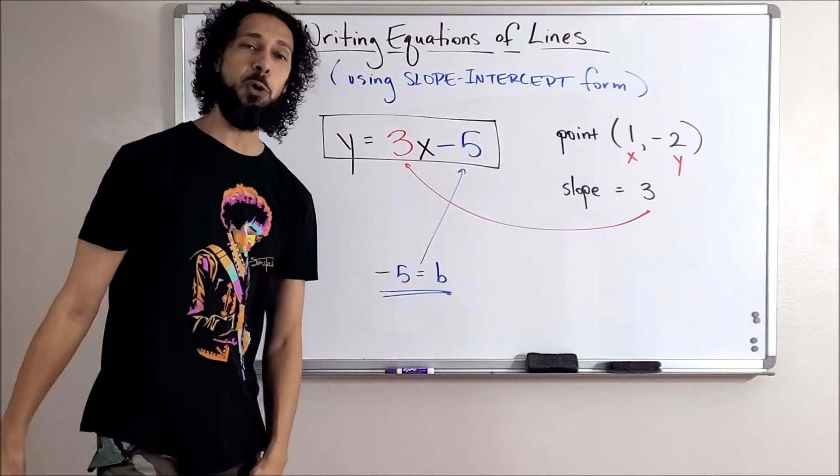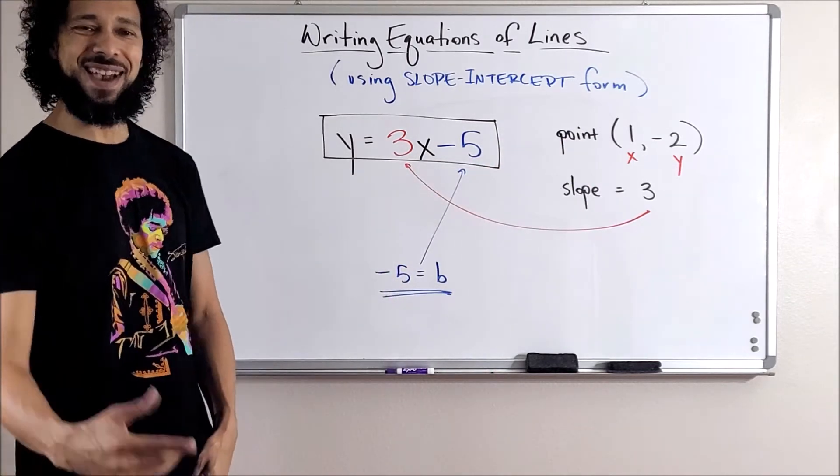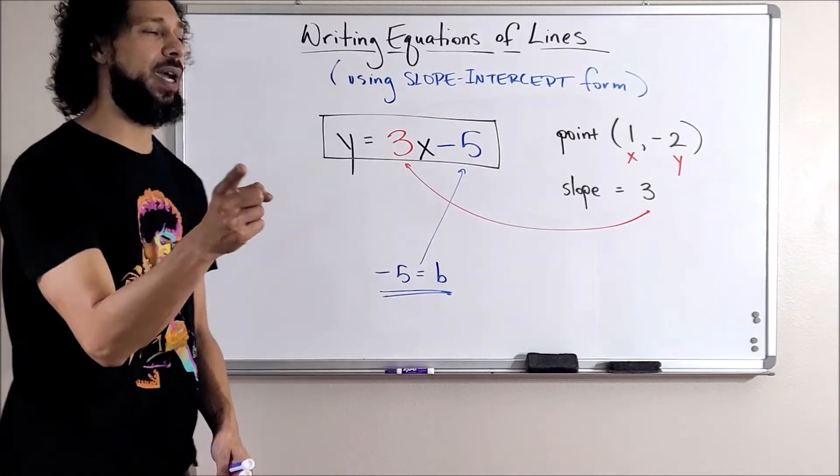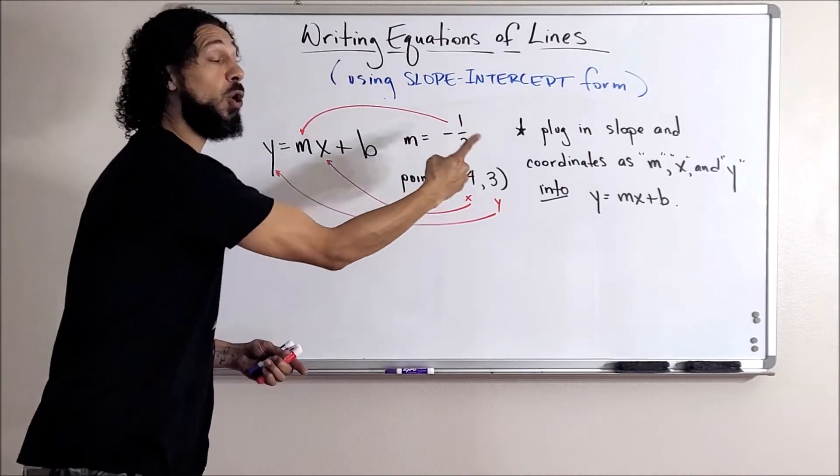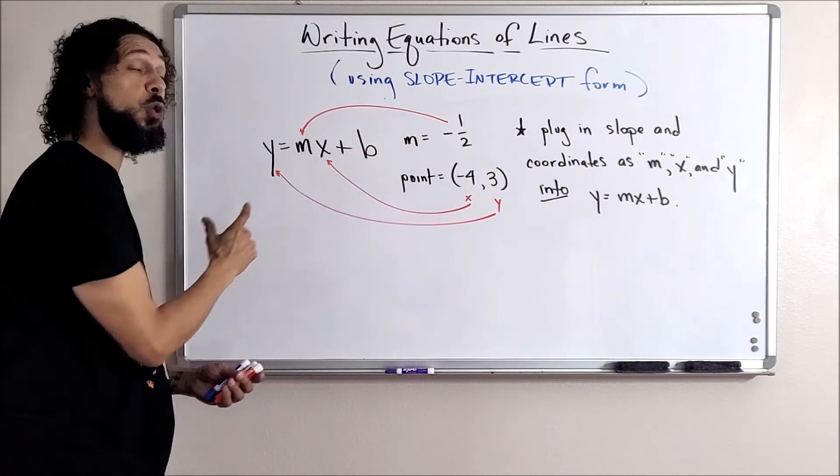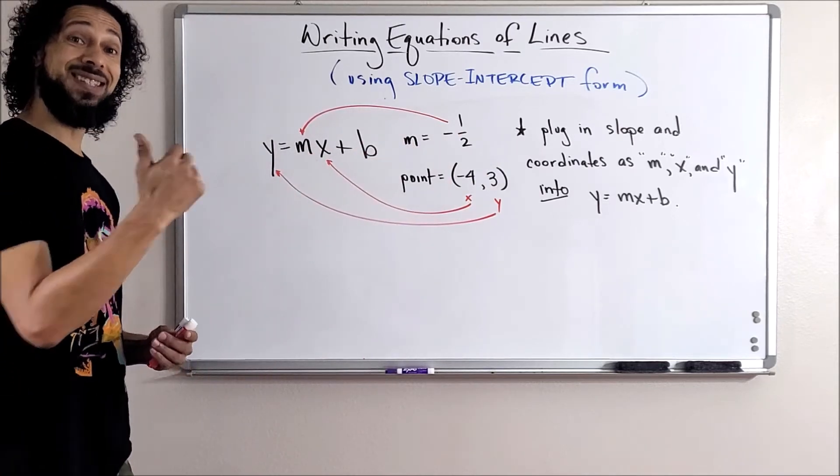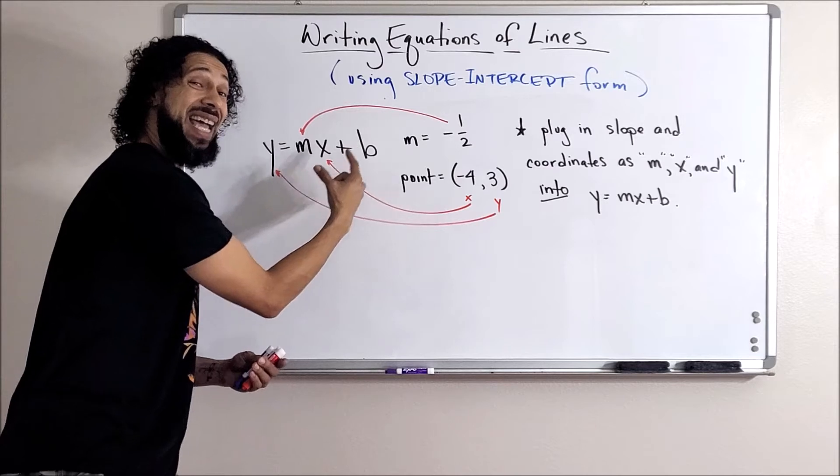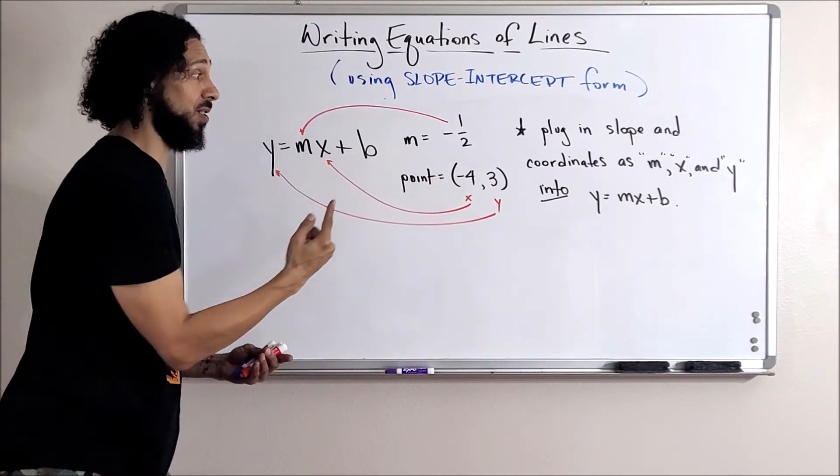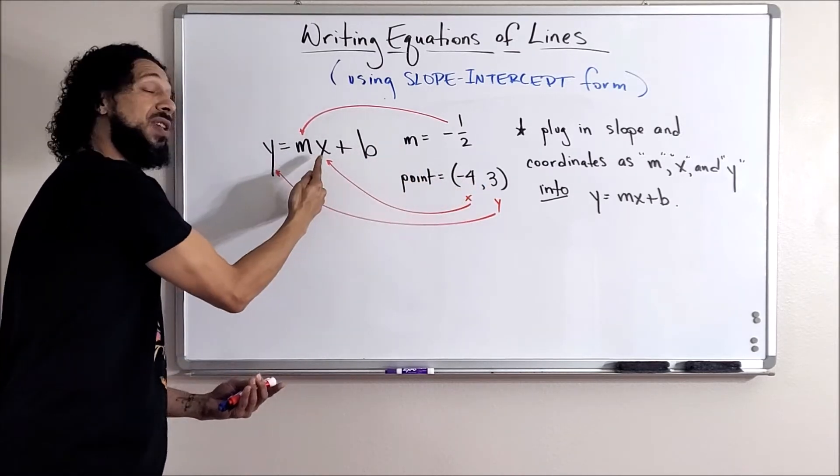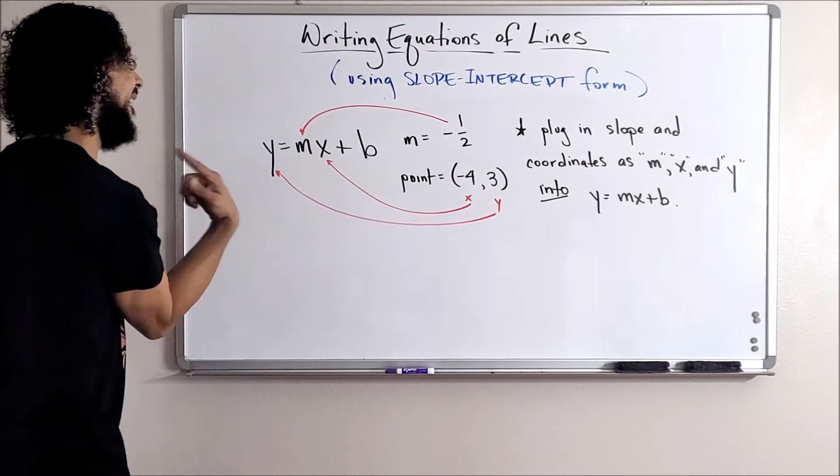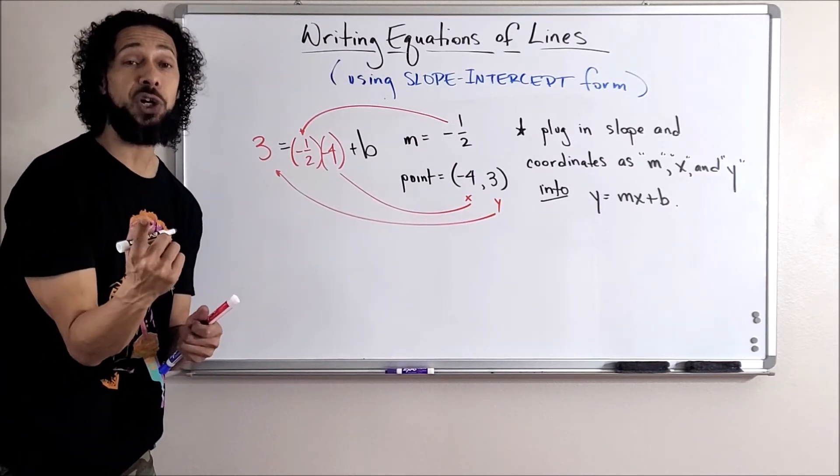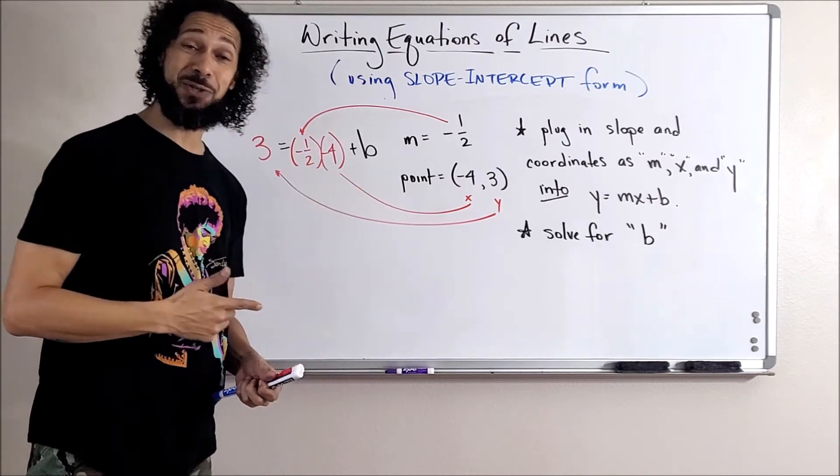Let's refresh real quick. First step: remember we're going to take all of our information and plug it into our y equals mx plus b. The slope goes in for m and the coordinates go in for their letters. That first value's an x, goes in for x. Second value's the y, goes in for y. Looks like this. Good. And then remember we're going to use that to solve for b.